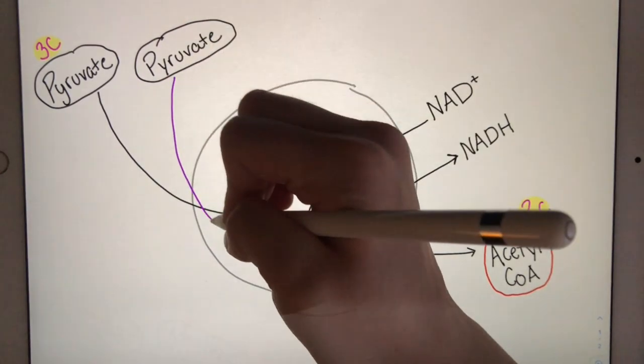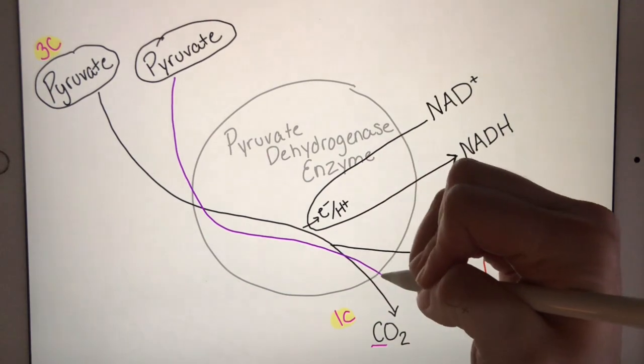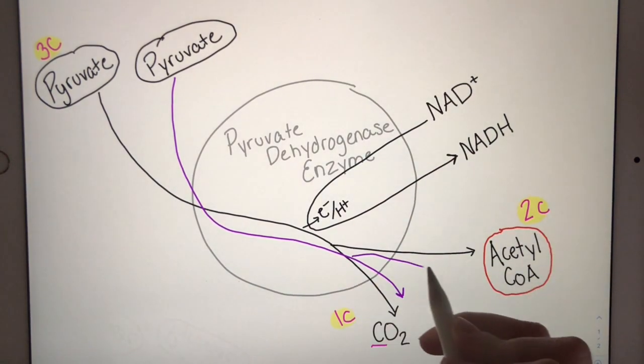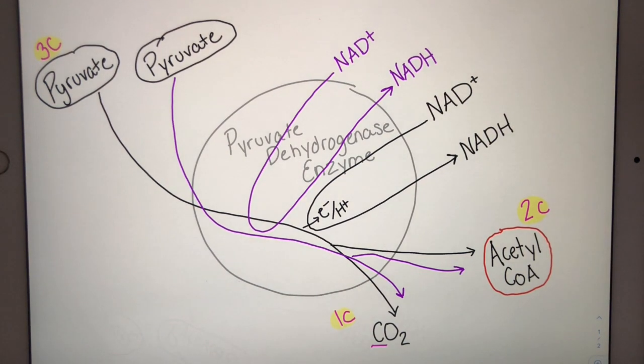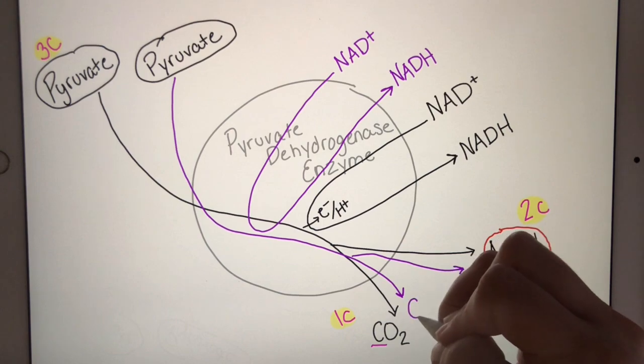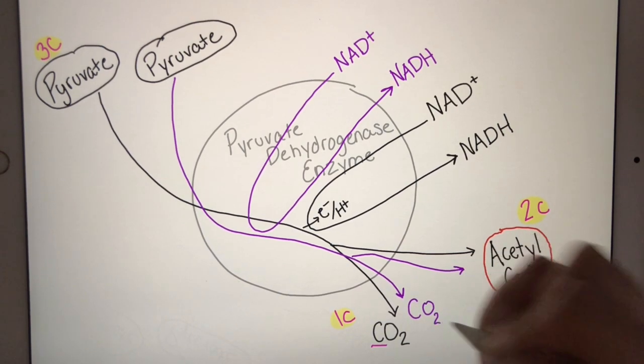This molecule of pyruvate is going through the same process. So we have another molecule of NAD+, becoming NADH. And as an output, we have another molecule of CO2 as a waste gas. And we have another molecule of acetyl-CoA.